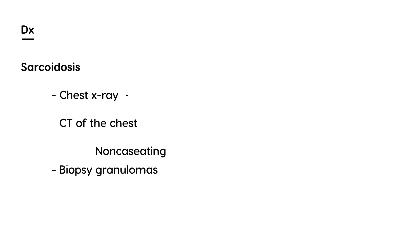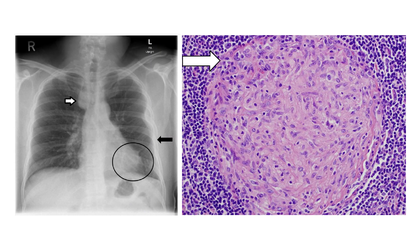On chest X-ray, the classic finding is called bilateral hilar adenopathy. Here is a picture showing what that means: there are bulky tissue areas near the blood vessels of the lungs. This represents enlargement of the lymph nodes deep in the center of the chest due to those granulomas. When you biopsy it, it will show the characteristic histological picture confirming the diagnosis.